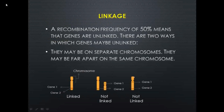A recombination frequency of 50% or more means that genes are unlinked. Unlinked genes undergo crossing over and show almost 50% or more recombination in the offspring. There are two ways genes may be unlinked: they may be on separate chromosomes, or they may be present very far from each other on the same chromosome.